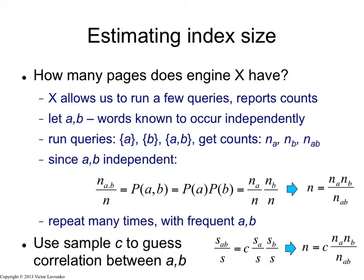Now, this is an estimate. And if the words a and b were truly independent in the index of engine X, this formula would give the right answer, the exact answer. Now, of course, I don't know if a and b are truly independent in the set of documents that are indexed by X. They could be independent in my sample,